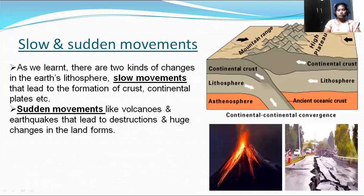So the slow and sudden movements of the earth. There are two kinds of changes in the earth's lithosphere: slow movements and sudden movements. Slow movements lead to the formation of crust and continental plates. Sudden movements like volcanoes and earthquakes lead to destruction and huge changes in landforms. The slow movements give scope for formation of new landforms like mountains, deep valleys, plains, and plateaus, while sudden movements give scope for volcanic eruptions and earthquakes.